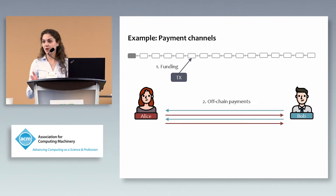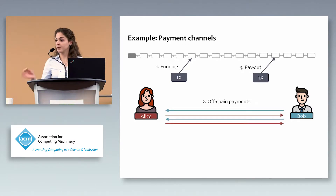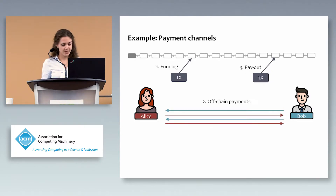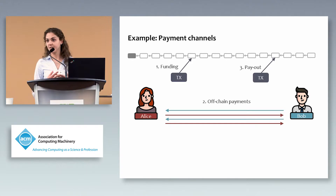They can then exchange many off-chain payments — Alice pays Bob, Bob pays something back. We don't care how many payments they perform. Once they are done, they go back to the blockchain and say they're finished, posting the final balance — for example, Bob has all the coins and Alice has nothing. No matter how many payments they perform off-chain, there are only two transactions on the blockchain. These payment systems already exist in practice, for example, the Lightning Network.